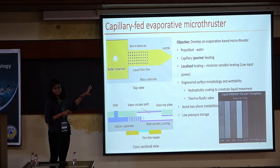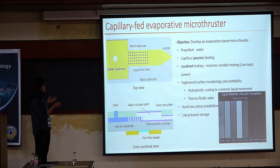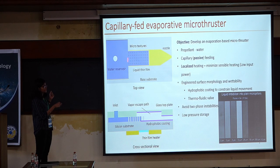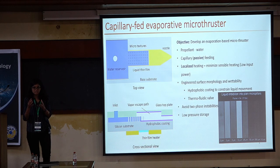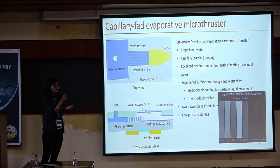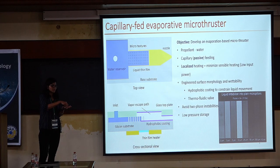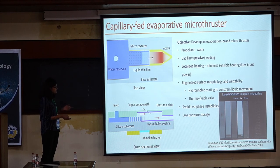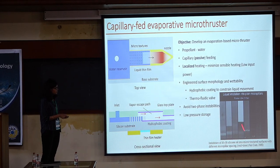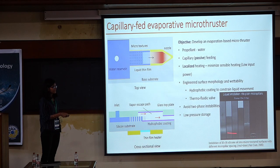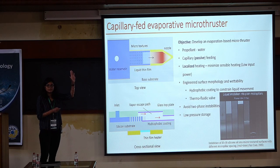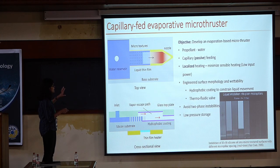What we are looking at is a capillary-fed microthruster. The idea is that these microtextures — imagine them to be like a sponge — when connected to a water bath, the liquid wicks up due to capillary forces. These are porous structures: the moment they come in contact with liquid, self-imbibition occurs because of capillary forces, and that is exactly the concept we are utilizing here.